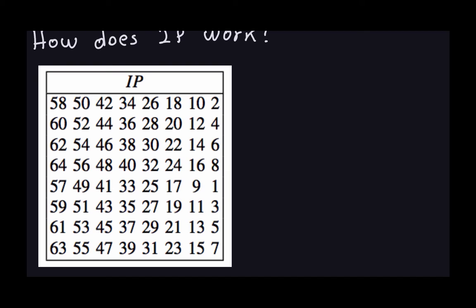The way you read this table is very important — you read it as you read English, from left to right and top to bottom, starting at the top left. This box contains all numbers from 1 through 64, denoting the positions of the bits.